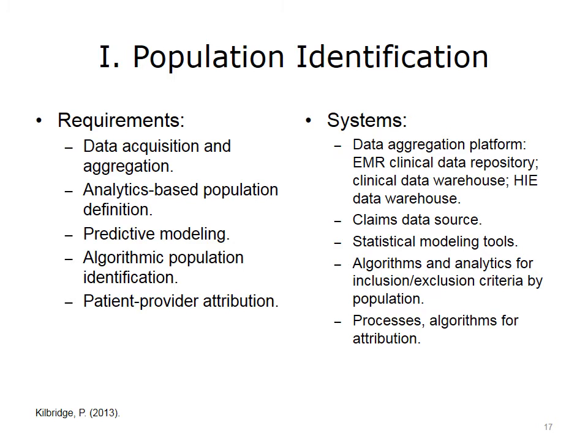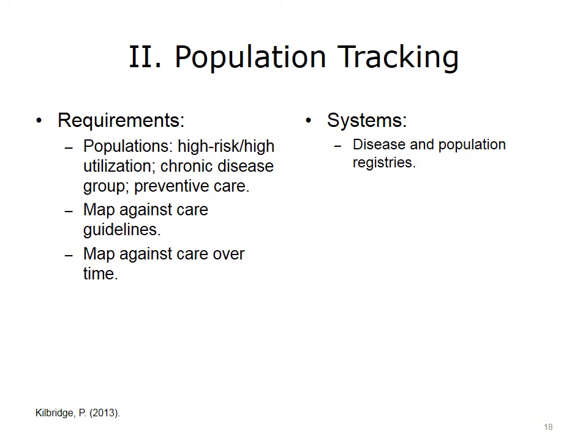For population tracking, there are several populations that require tracking from the overall total population. We have subgroups such as high-risk, high-utilization populations who get very intensive services from case managers, health behavior specialists, or health coaches. For the chronic disease group, we identify which patients have particular chronic diseases such as asthma, diabetes, or heart failure. For the total population, we track preventive care to ensure health promotion and disease prevention care is given as an opportunity for all members.